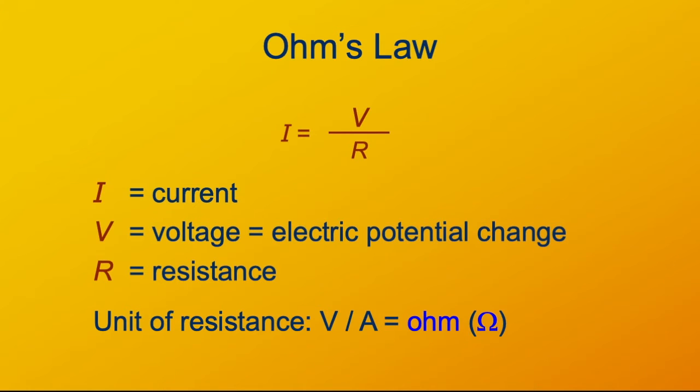The unit of resistance, then, is what it has to be. As I mentioned before, it's volts per ampere. That's an important enough unit that it has its own name, the Ohm. The symbol for Ohm is the capital Greek letter Omega. For obvious reasons, Omega kind of sounds like the beginning of Ohm.